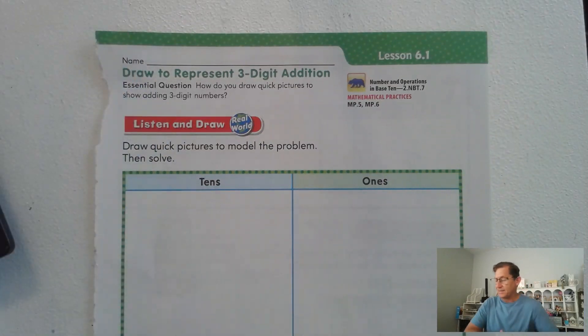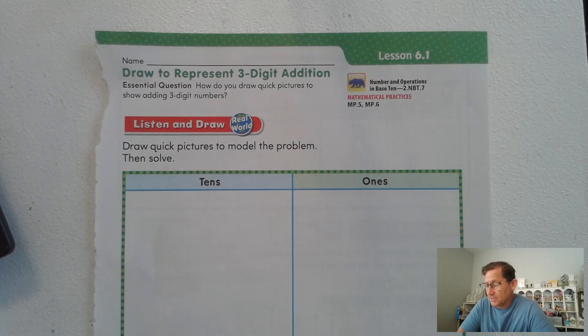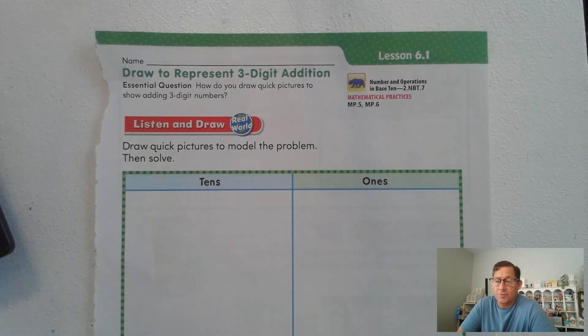Hello everybody, in today's lesson, lesson 6.1, we are starting on page 281 of the 2nd grade GoMath textbook, and our topic today is Drawing to Represent 3-Digit Addition. Now we're going to be modeling numbers in the hundreds place instead of in the tens.